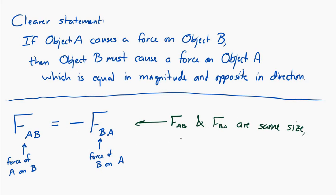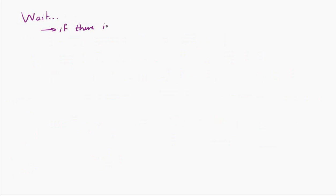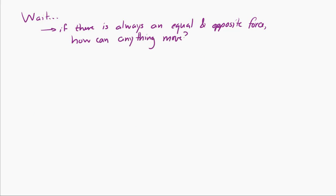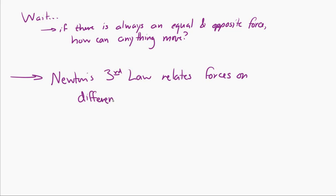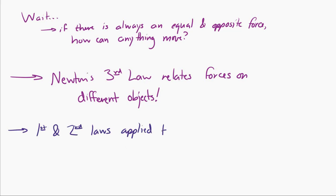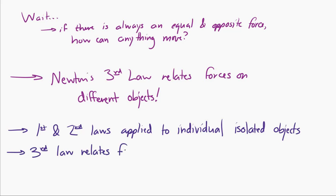When you read that, sometimes people ask: how can anything move if there's always an equal and opposite force for every force? The trick is that Newton's third law relates forces acting on different objects, not on the same object. This is different from the first and second laws, which look at isolated objects. When we apply Newton's second law, we look at only the forces on a single object. Newton's third law is different — it relates forces acting on two different objects.